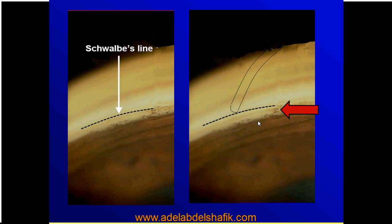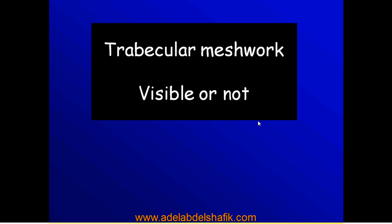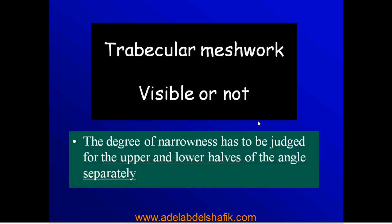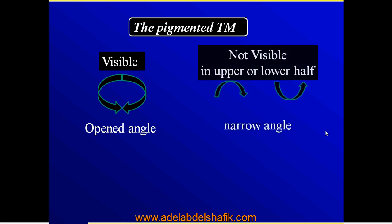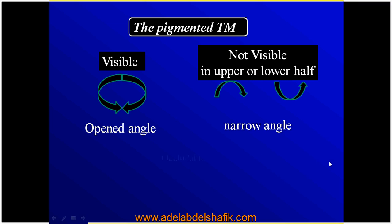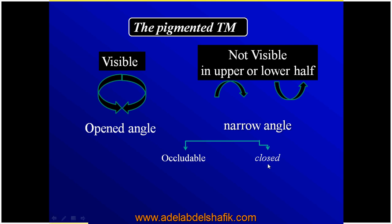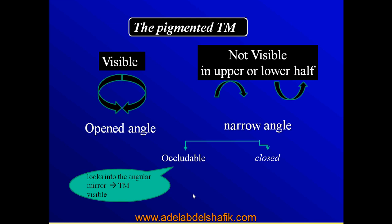Here we have the trabecular meshwork. If the trabecular meshwork is visible or not allows us to say whether the angle is open or closed. We should check both the upper and lower halves separately and make our judgment. If the trabecular meshwork can be seen up and down through 360 degrees, it is an open angle. If the trabecular meshwork is not seen in the upper or lower half, it is a narrow angle. A narrow angle can be either an occludable angle or a closed angle. To diagnose an occludable angle, we ask the patient to change their gaze and look toward the mirror being used for examination. If the trabecular meshwork becomes visible, it is an occludable angle.